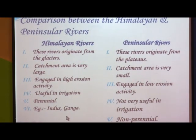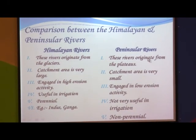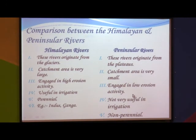Third difference: Himalayan rivers have very high erosion activity because they flow through mountains, so weathering and deposition processes are very high. Peninsula rivers engage in low erosion activity by comparison. Fourth, Himalayan rivers are useful for irrigation in states like Punjab, Haryana, Uttar Pradesh, and Rajasthan, whereas Peninsula rivers are not as useful for irrigation. Himalayan rivers are perennial — they flow all 12 months — while Peninsula rivers are non-perennial and totally dry in summer.